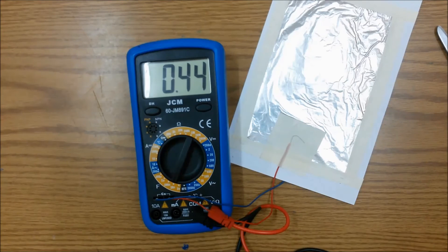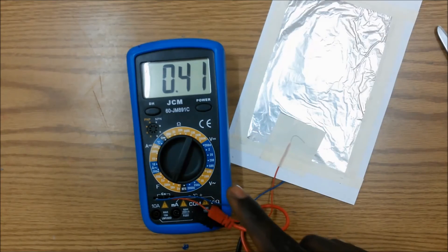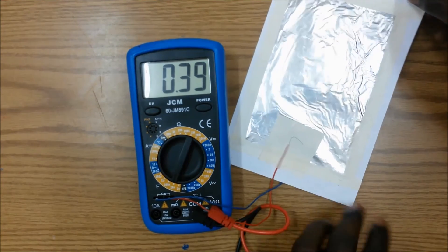Now let's see what would happen if we were to modify the surface area of both conductive plates. To do this, we'll be using our scissors to cut our capacitor in half.